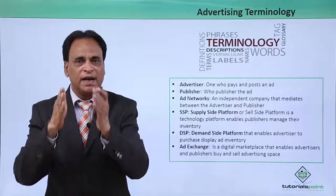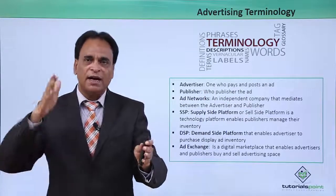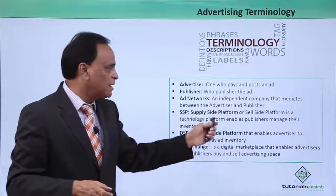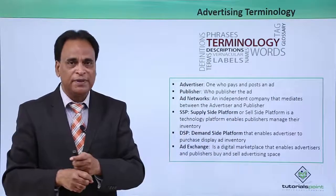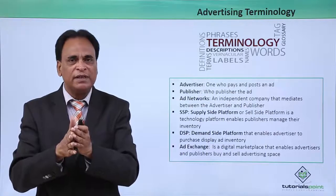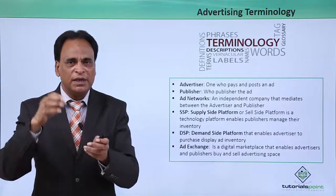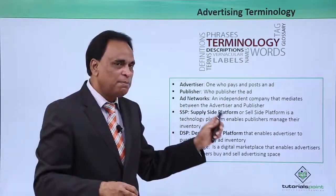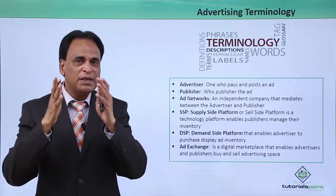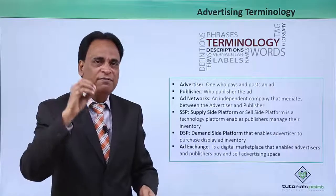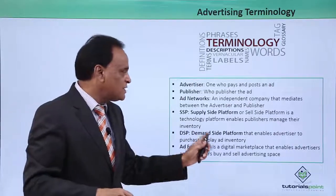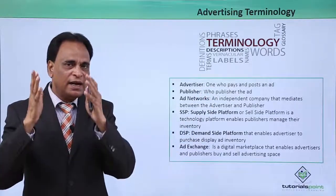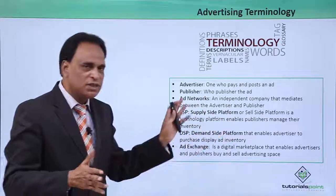Ad networks are independent companies that mediate between the advertiser and the publisher — the bridge between the two. SSP, or supply-side platform (also called sell-side platform), is a technology platform that enables publishers to manage their inventory — the number of ads appearing on their mobile apps and websites. DSP is associated with the advertiser and is used to manage all the ads they are displaying; the entire inventory is managed by the DSP platform.